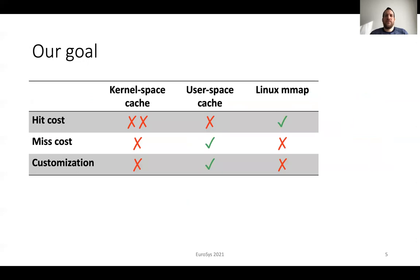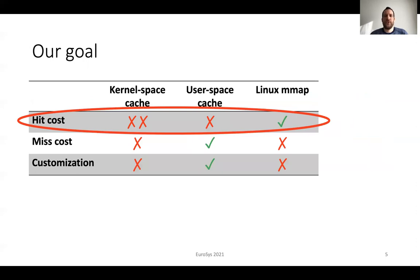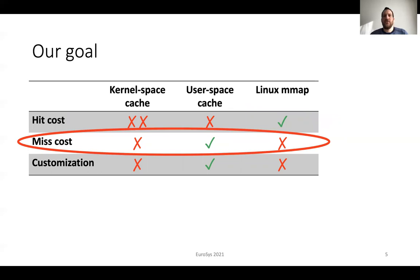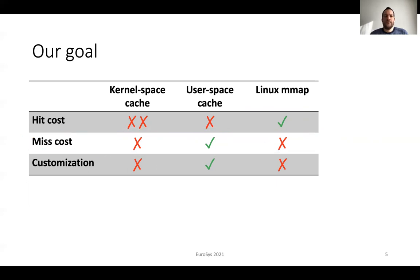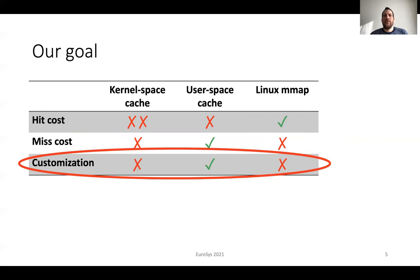This table summarizes the benefits and drawbacks of different ways to do storage caching today. In terms of hit cost, a kernel space cache requires system calls for hits. A user space cache removes the need for system calls. Linux EMAP provides the lowest overheads as hits are handled entirely in hardware. The miss cost with a kernel space cache is high due to system calls. A user space cache can remove system calls by using dedicated storage devices and user space IO frameworks. With Linux EMAP, the miss cost requires an expensive page fault. Finally, the kernel space cache and Linux EMAP rely on the Linux buffer cache and the IO stack, which are not customizable based on application needs. A user space cache enables the use of custom caching policies and ways to access storage devices.